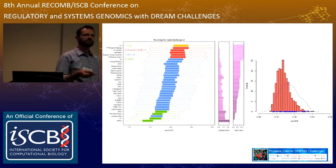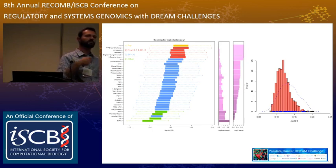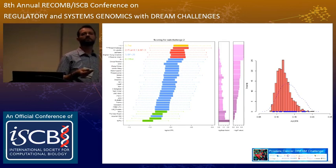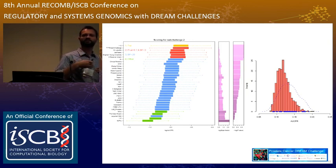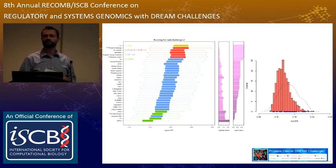Sub-challenge two was predicting adverse discontinuation due to adverse events within less than three months. There was no very clear winner, but we had a group of about six top performers that outperformed the random model and met our statistical criteria — you'll be hearing from two of them today. This was a novel question with not much prior standard in the field, so there's still great room for improvement.